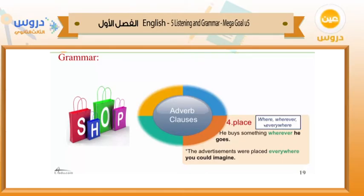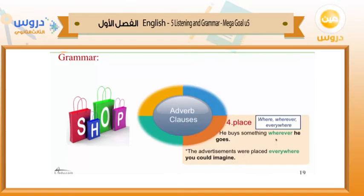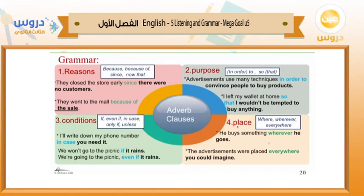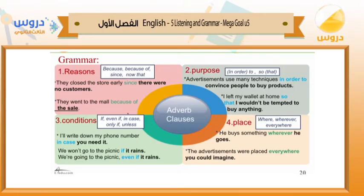The last category is place. The adverbs used are: where, wherever, everywhere. For example: 'He buys something wherever he goes' — 'wherever he goes' is the adverb clause giving information about place. Another example: 'The advertisements were placed everywhere you could imagine' — 'everywhere you could imagine' is the adverb clause. So we now have all four categories for adverb clauses: reasons, purpose, conditions, and place, each with different adverbs.